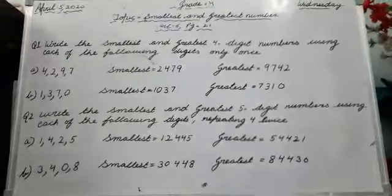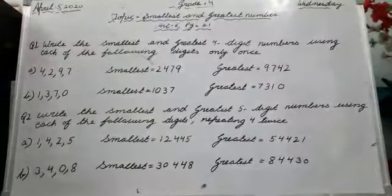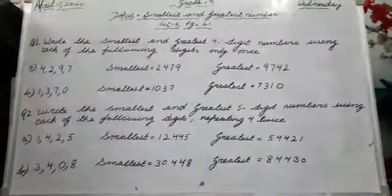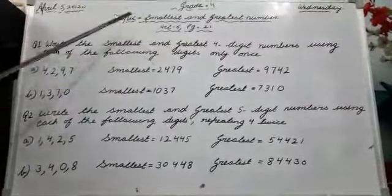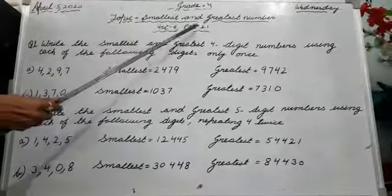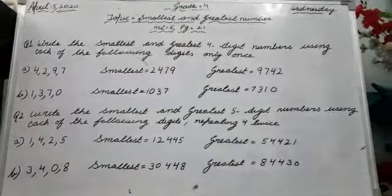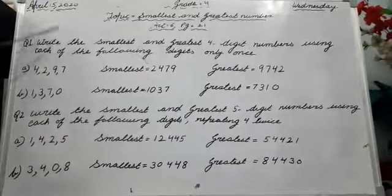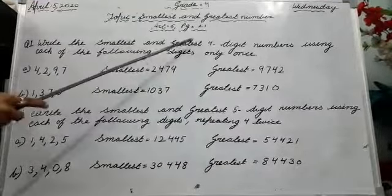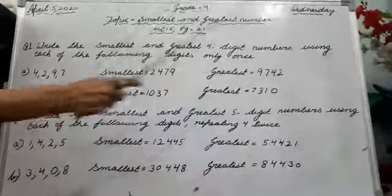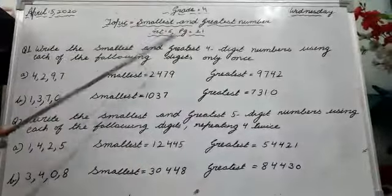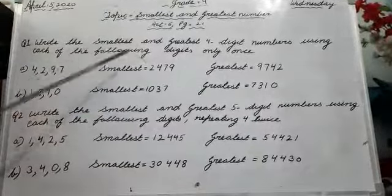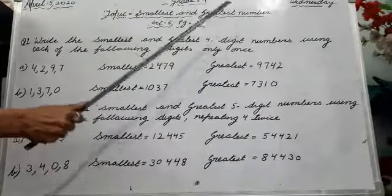Hello students. Now let's start the new topic: smallest and greatest number. This is the topic from Activity 6, page number 21. Question number 1 is: write the smallest and greatest 4-digit number using each of the following digits only once. It means that each digit must be used one time.